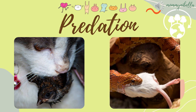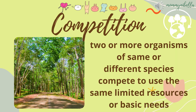These two pictures are examples of predation. In the first picture, the cat eats the bird — the predator is the cat and the bird is the prey. The second picture shows the snake eating the mouse — the predator is the snake and the prey is the mouse. Competition is when two or more organisms of the same or different species compete to use the same limited resources or basic needs.